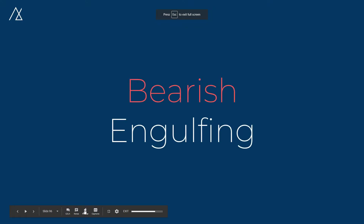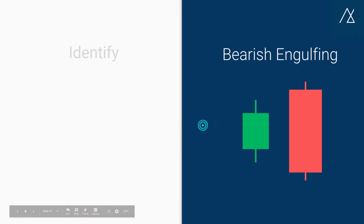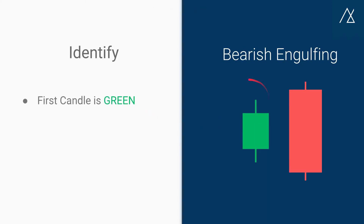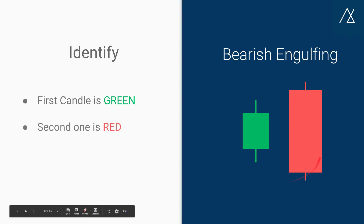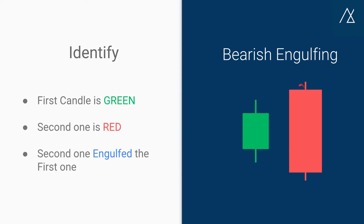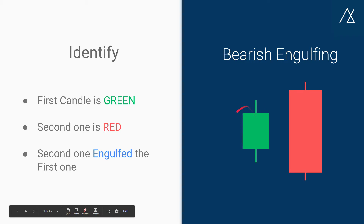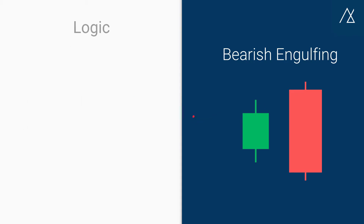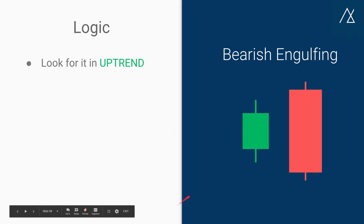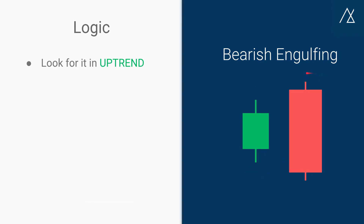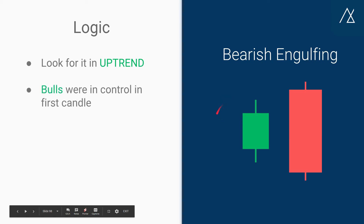Now let's see the bearish part, which is the total opposite. To identify a bearish engulfing: the first candle should be green, the second one should be red, and the second one should engulf the previous candle. The logic: we have to look for it in an uptrend. The price is rising, we see a green candle, and then the red candle engulfs it in the uptrend.